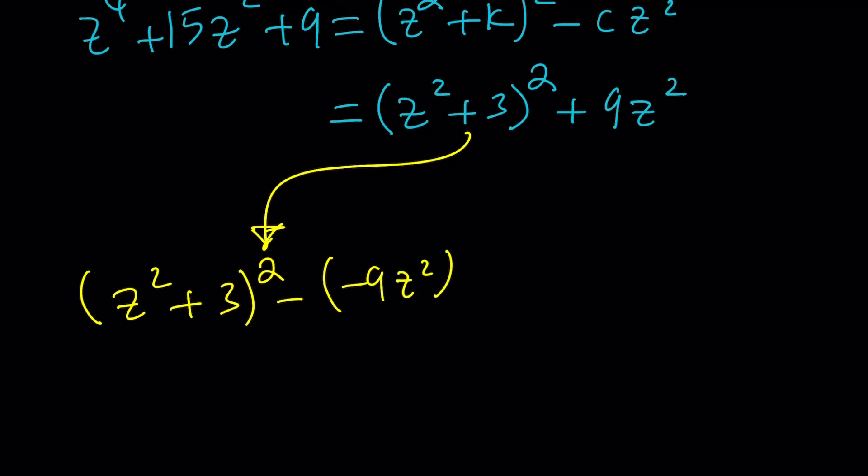And then I can basically write the negative nine z squared as three z i squared. Because if you square i, you get negative one, and nine z squared multiplied by negative one gives you what you want. Make sense? Now this is a difference of two squares.